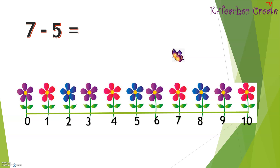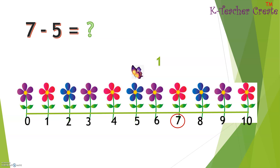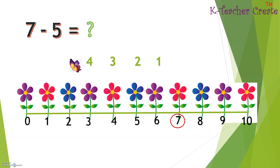Let's see this example: seven minus five equals. First, you take the bigger number, which is seven. You have to circle that seven, and then count backwards five times. One, two, three, four, five.